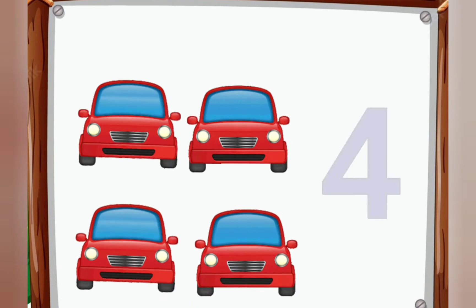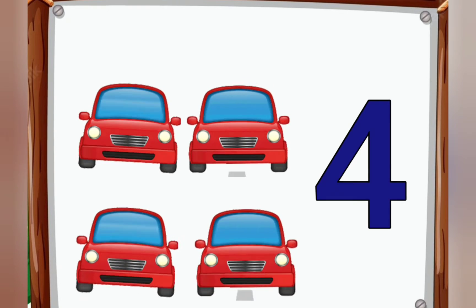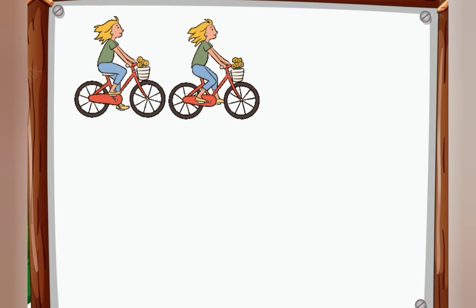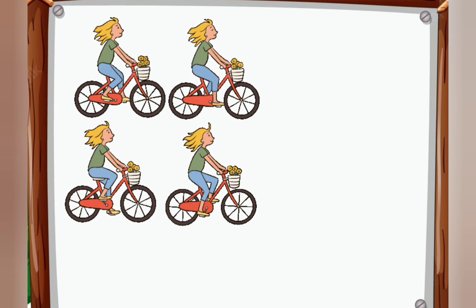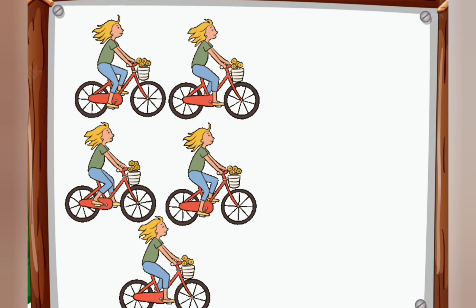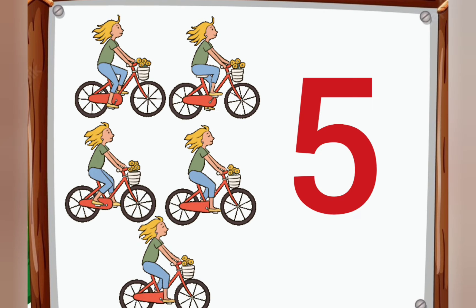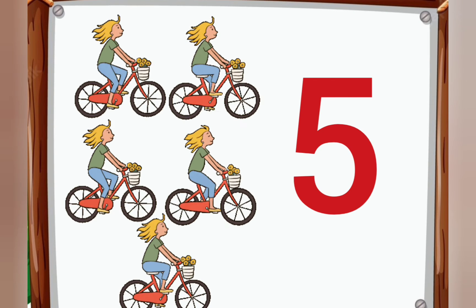One, two, three and four — four cars. One, two, three, four and five — five bicycles.